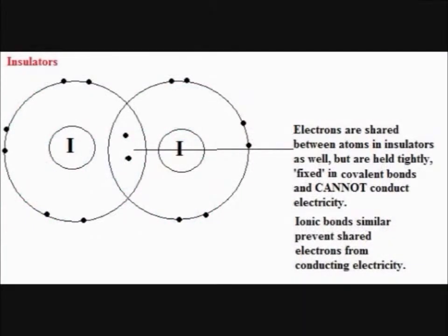In insulators, even though there is sharing between electrons in insulators, like covalent compounds, the electrons are held tightly by their covalent bond, and cannot move freely through the solid, making them poor conductors.